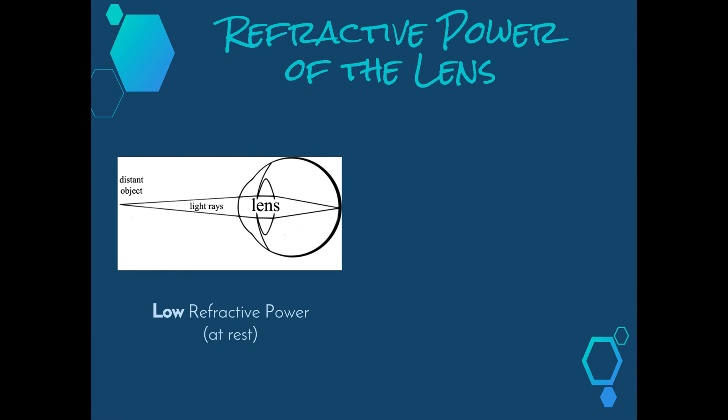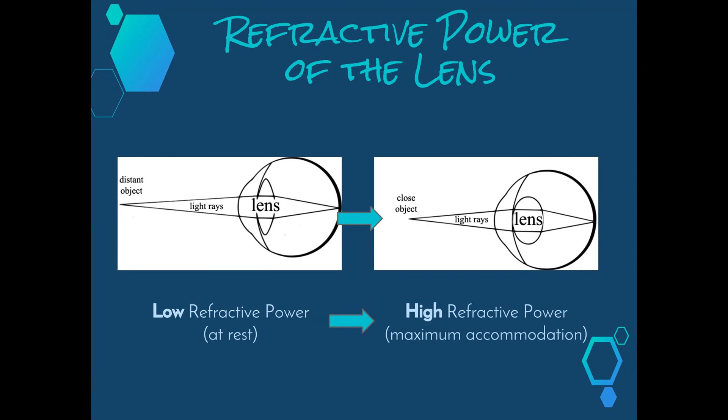Therefore, the refractive power of the lens changes from low in a flattened lens when at rest to high in a rounder lens at maximum accommodation. When a person grows older, the lens loses some of its elasticity and cannot alter its shape easily. There is a tendency for it to remain in its elongated shape with the muscles at rest, resulting in some people becoming long-sighted, which means that they struggle to see close objects when they get older.